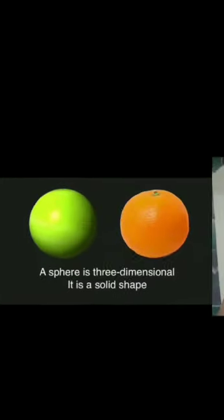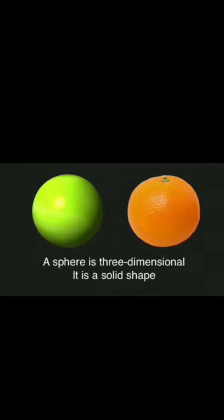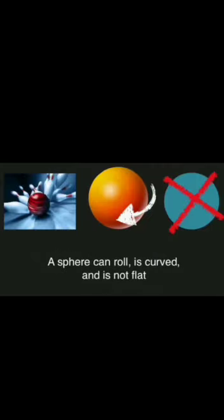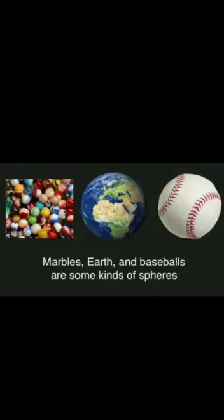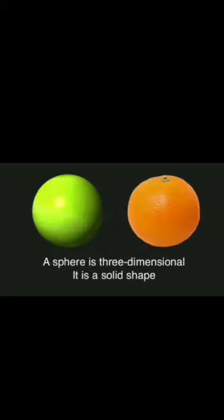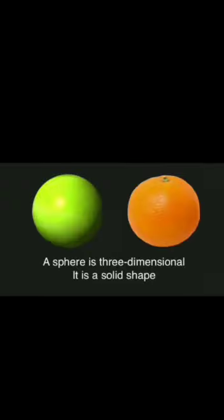A sphere is three-dimensional — it is a solid shape. A sphere can roll as it is curved and it's not flat. Marbles, Earth, and baseballs are some kinds of spheres.